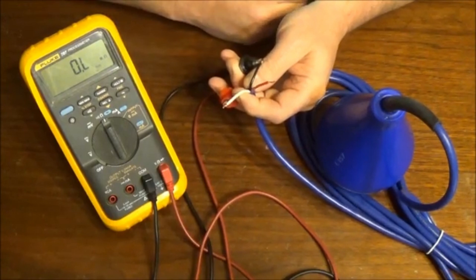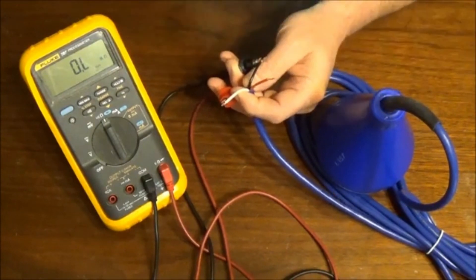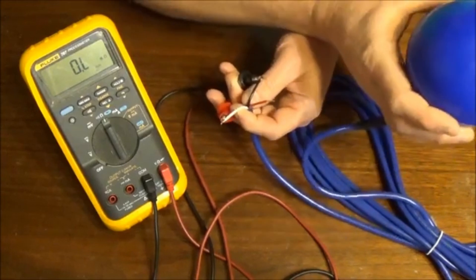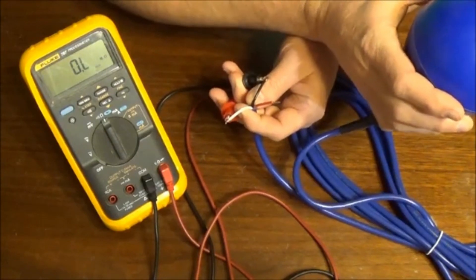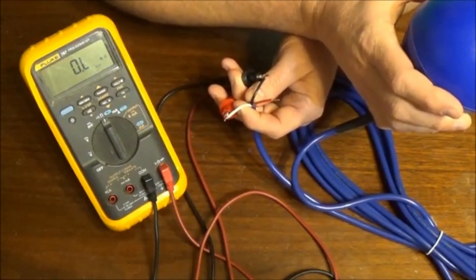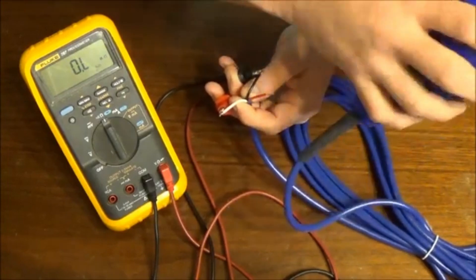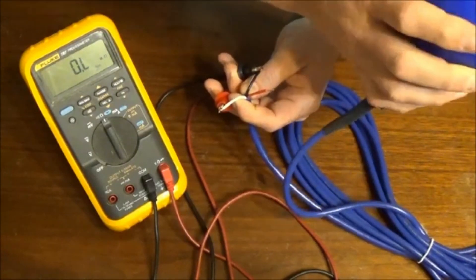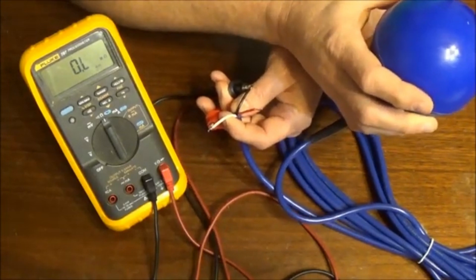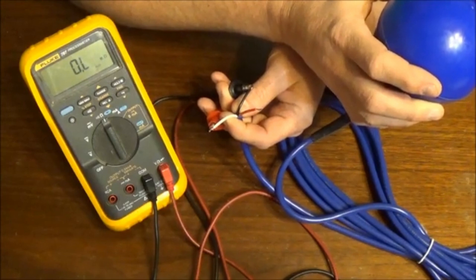Let's say that it is. So now we've got the leads measured across the float. And if we toggle the float to what should be the other condition or opposite condition, that state should change to a short. As you can see, you can hear the switch toggling. This meter is reading the same either way, indicating that the float switch is bad.